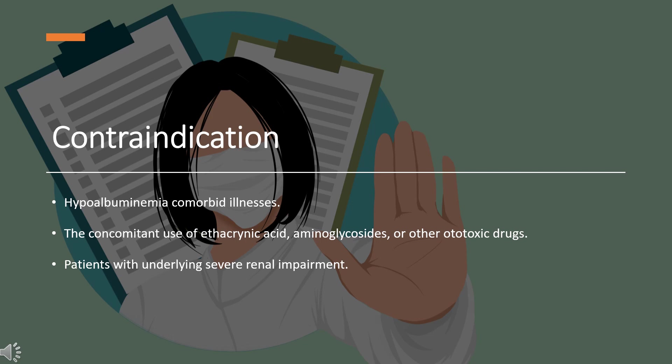Contraindications: Use of a higher-than-recommended dose of furosemide or a fast infusion rate of the drug; hypoalbuminemia and comorbid illnesses; the concomitant use of ethacrynic acid, aminoglycosides, or other ototoxic drugs; and patients with underlying severe renal impairment.